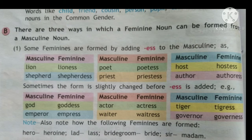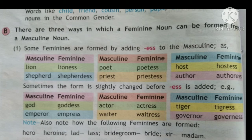But sometimes the form is slightly changed before adding -ESS. For example, if the masculine is emperor — E-M-P-E-R-O-R — the feminine becomes empress: we remove the O and R and add -ESS after R, so the spelling becomes E-M-P-R-E-S-S. God becomes goddess — the D doubles. Actor becomes actress — A-C-T-R-E-S-S. Waiter becomes waitress. Tiger becomes tigress. Governor becomes governess.